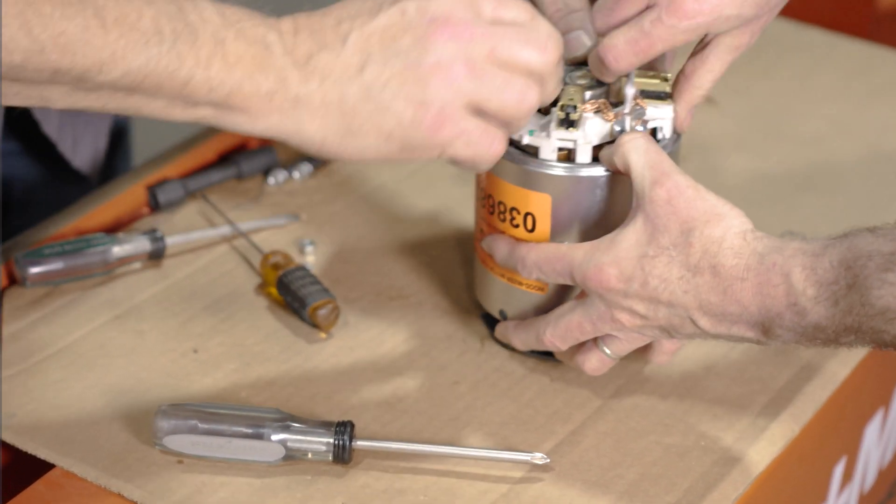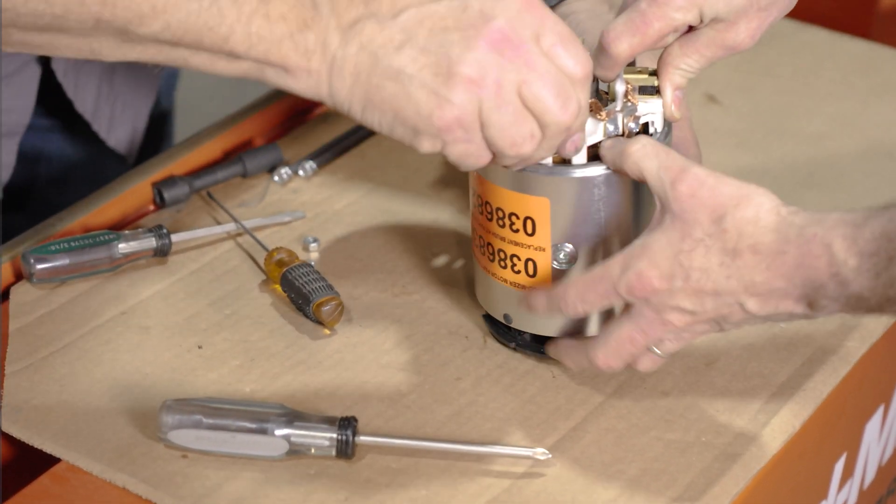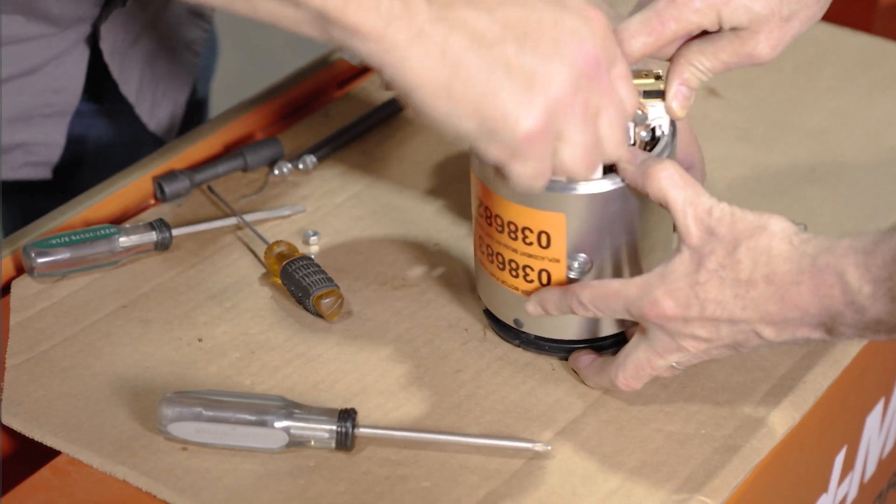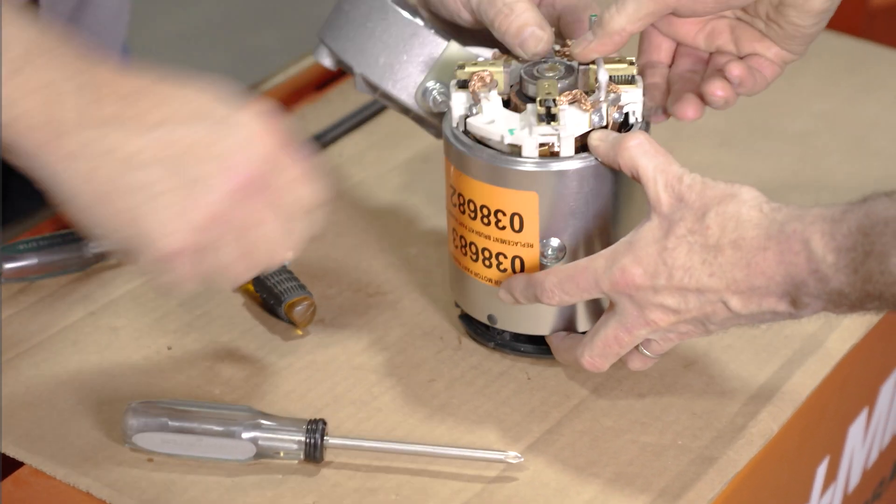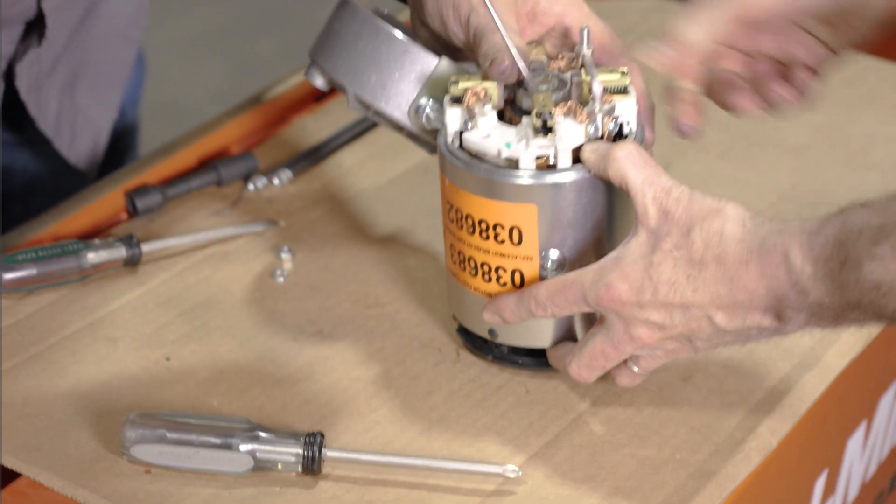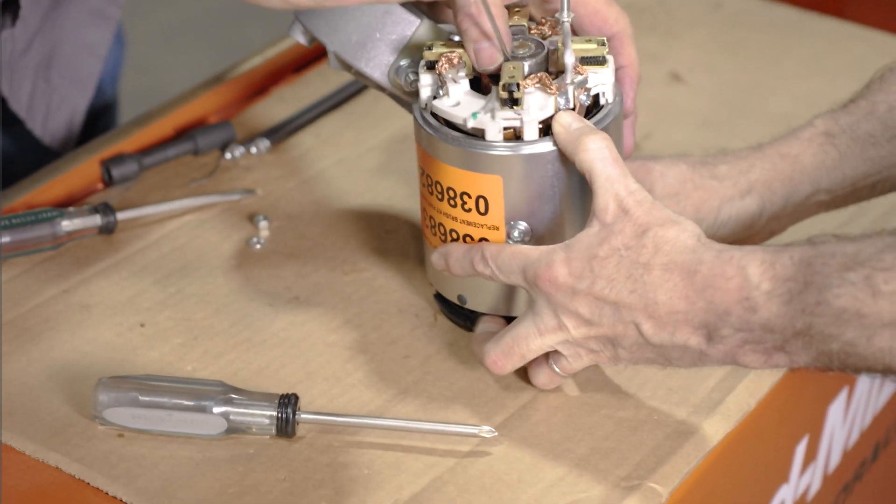Push them back until you get them past the commutator, and that will allow the motor to go down. Sometimes you need a little screwdriver to help pry on them a little bit.